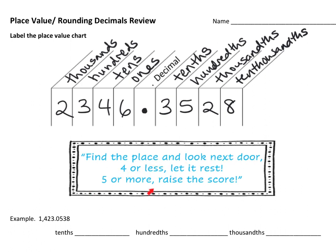Four or less, let it rest; five or more, raise the score. So if I wanted to round a number to the tenths, meaning I want to keep one decimal, I would look next door at the next digit. If that number is five or more, I raise the score. I would round it up to 4.4.